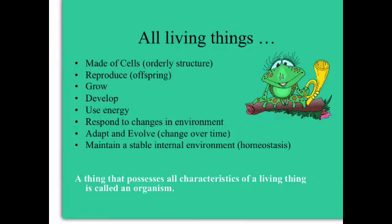All living things are made of cells and have some sort of orderly structure. Every living thing needs to have the ability to reproduce and create more offspring to keep its species going. All living things grow, they develop, they have to use energy, they have to respond to changes in their environment, they need to adapt as well as change over time — we call that evolution. And they must maintain some sort of stable internal environment, which we call homeostasis.